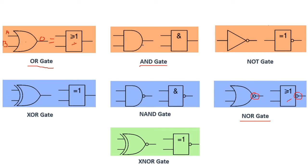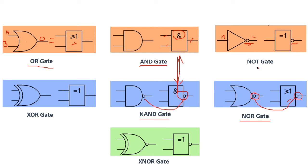Now for the AND gate — this is the normal AND gate symbol, and this is another equivalent symbol. We have three inputs and an output, with an ampersand symbol inside the rectangle. For the NAND gate, it is exactly the same symbol but we add a small circle — always this circle means NOT. For the NOT gate, we have one input and one output, and the equivalent symbol uses 'equal to one' with a circle.